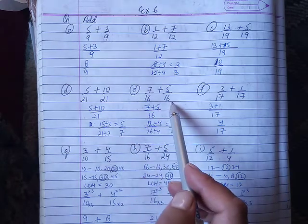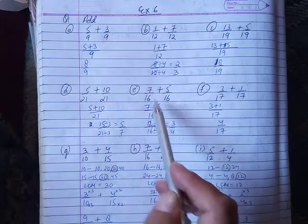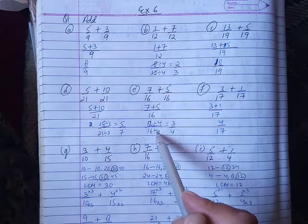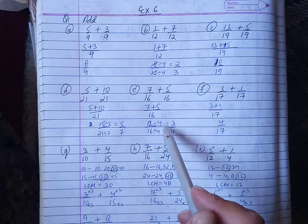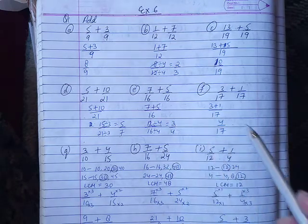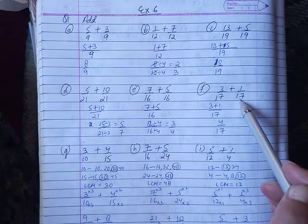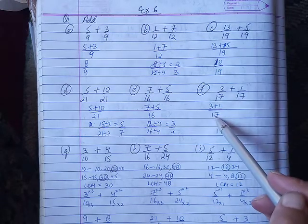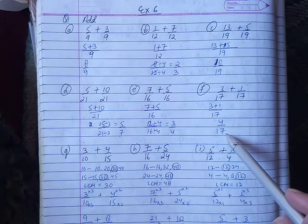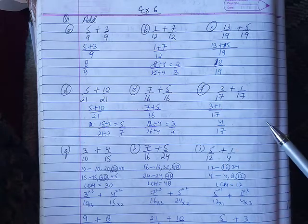Like fractions with denominator 16: 7 by 16 plus 5 by 16. Divide by 4: we get 3 by 4. Part 17 has like fractions with denominator 17: 3 plus 1 equals 4 by 17. The answer is 4 by 17.